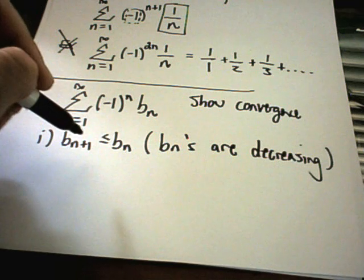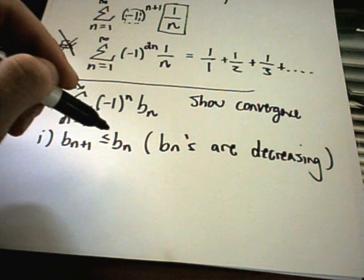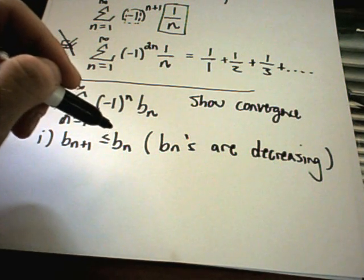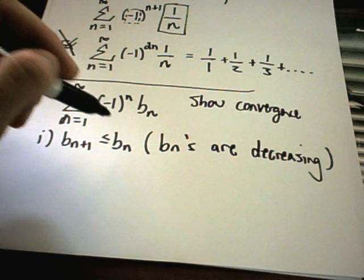But suppose after it goes 1, 2, 3, 4, 5, 6, 7, 8, 9, from there on it does start decreasing. So 8, 7, 6, 5.5, 5.3, 5.2, 5.1.